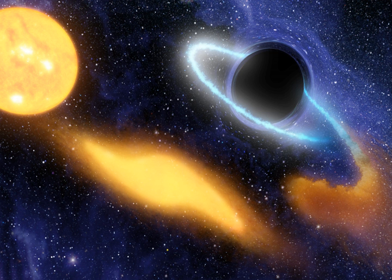The binary pair in OJ 287, 3.5 billion light-years away, contains the most massive black hole in a pair, with a mass estimated at 18 billion solar masses.